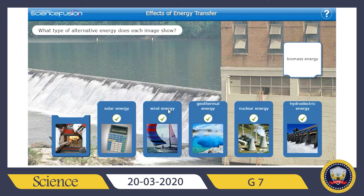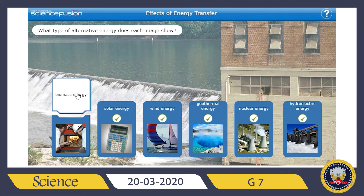Wind energy is a renewable energy resource that does not produce any waste materials or greenhouse gases, but it can harm the bird population around it and we can't harness wind energy everywhere on earth. Finally, biomass is a renewable resource, but it does produce carbon dioxide gas as a waste material, so it can pollute the atmosphere.